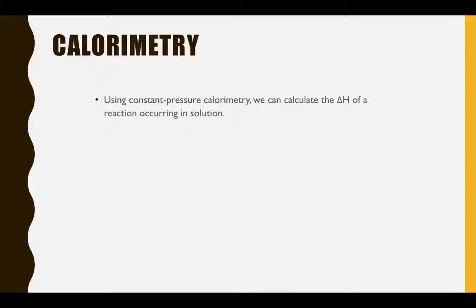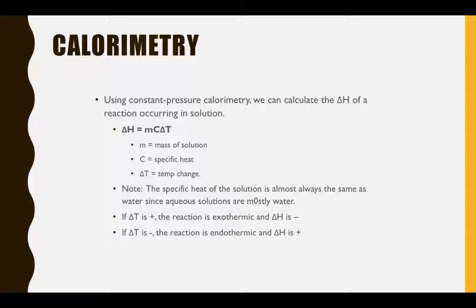Constant pressure calorimetry is conducted when we run a reaction that occurs in solution. For this reason, we will always be measuring the temperature change of the water. In order to calculate energy change of the system, we'll use the specific heat equation. Here, m is mass of the solution, c is specific heat, and delta T is temperature change.